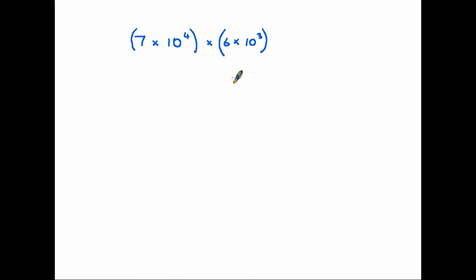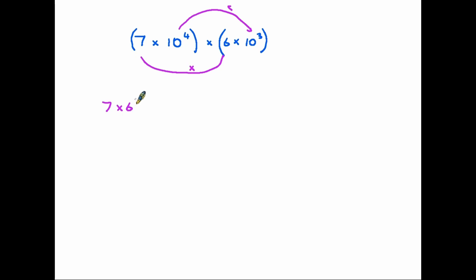Now if you are already familiar with multiplying and dividing powers you will recognize one of the methods we use here. Quite simply we are going to collect the numbers together — the seven and the six — and multiply those, and then we're going to look at the powers and multiply those together. In other words, ten to the power four multiplied by ten to the power three will give us our answer.